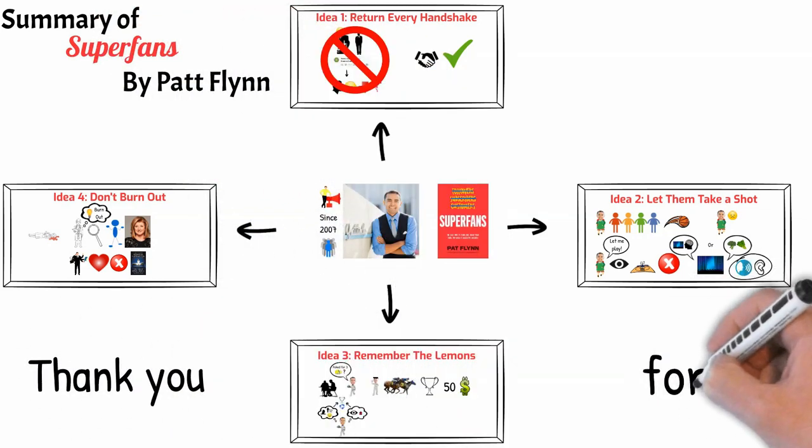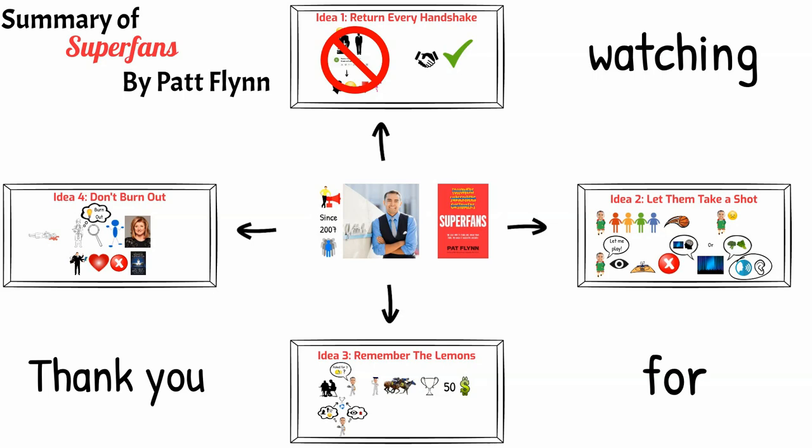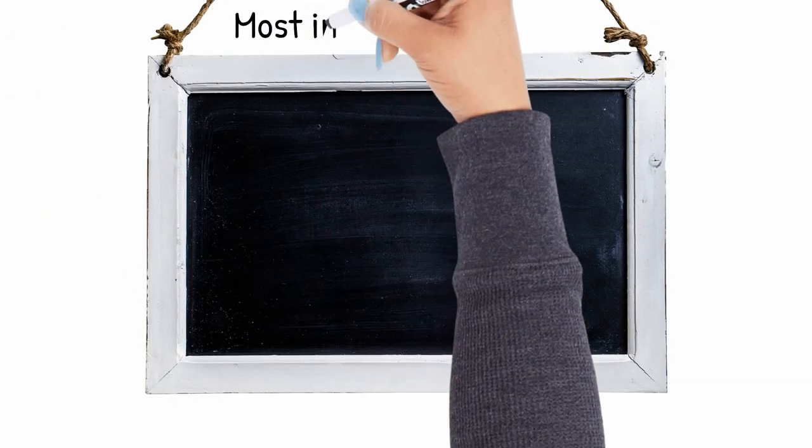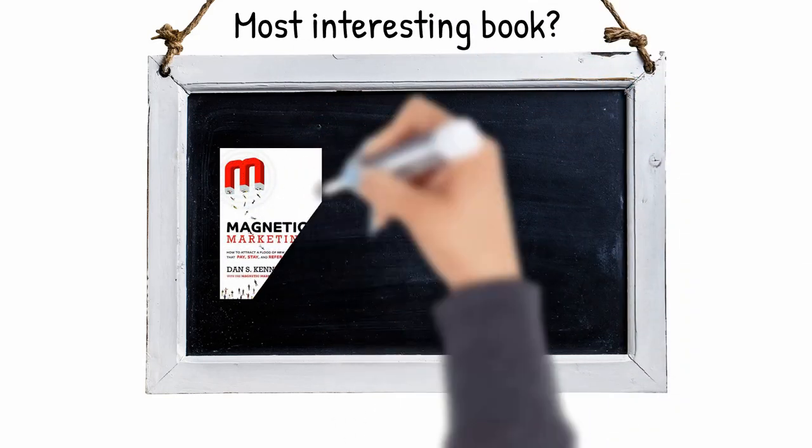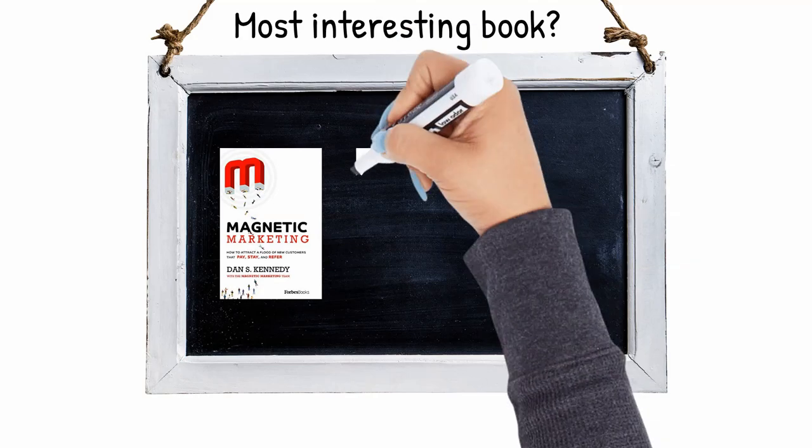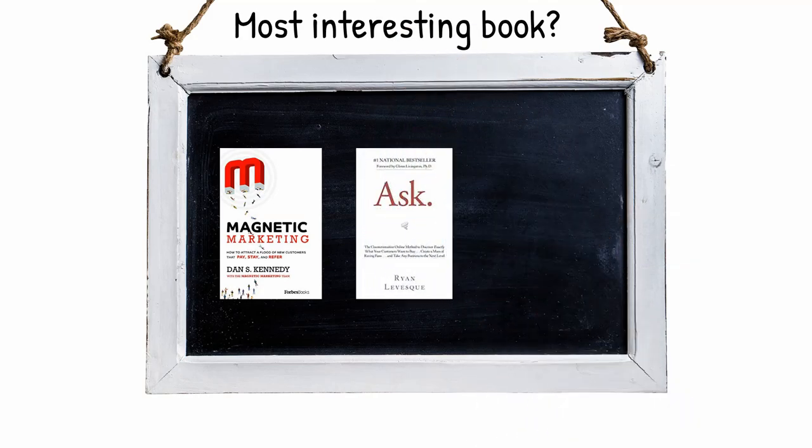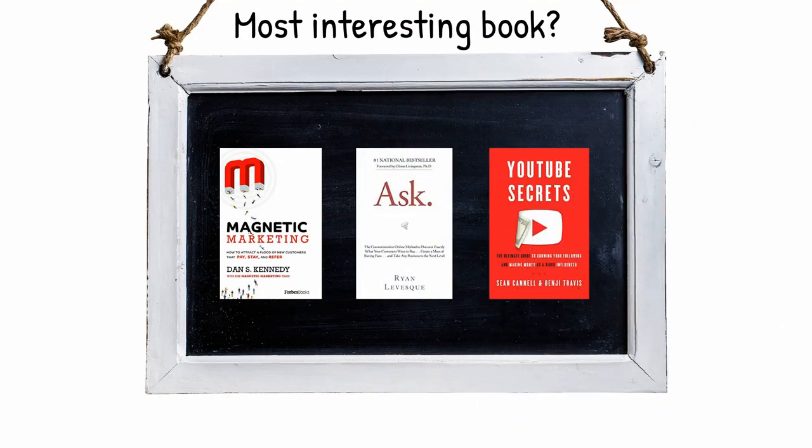Thank you for watching. Today, I have a question for you. Which one of these marketing books seems most interesting to you and why? Magnetic Marketing by Dan Kennedy, Ask by Ryan Levesque, or YouTube Secrets by Sean Cannell. Let us know in the comments below. Stay awesome and see ya, improvementers.